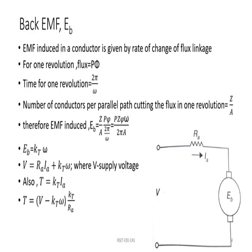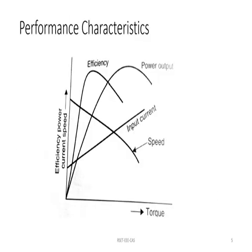Now we can draw the equivalent circuit of a permanent magnet DC motor. In this figure, the back EMF is KT·omega, V is the supply voltage, Ia is the circuit current, Ra is the armature resistance, and Eb is the back EMF generated in the armature. We can also draw the performance characteristics of a permanent magnet DC motor, where efficiency, output power, input current, and speed are plotted with respect to torque.